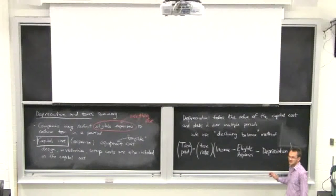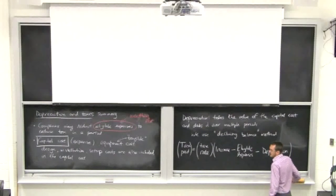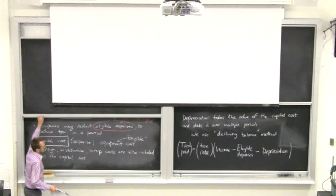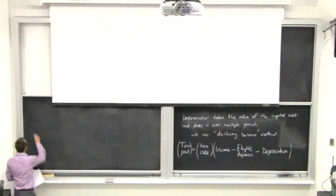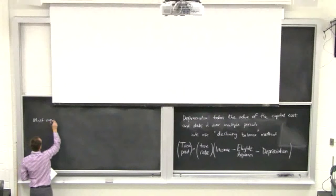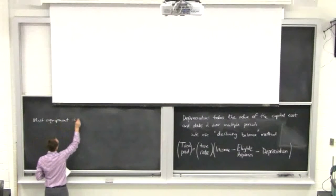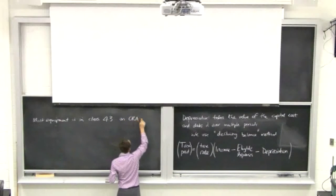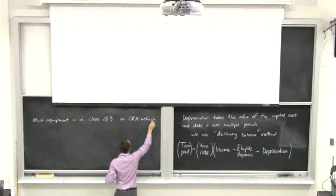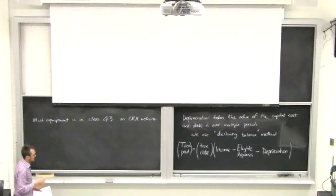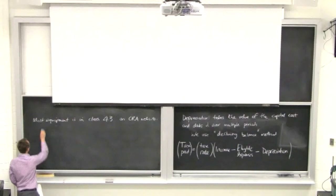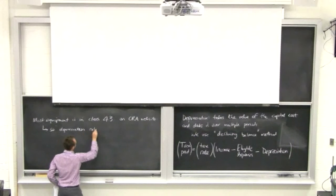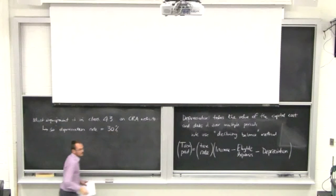When we looked at depreciation last time, I said most depreciation we'll deal with in this course is Class 43. Most equipment is in Class 43 on the CRA website, and what that implies is that your declining balance depreciation rate is 30 percent for that class.